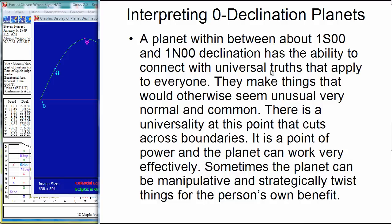So, you're neither north nor south. You're very, very close to it. So, your ability to connect with universal truths that apply to everyone, you're able to make things that would otherwise seem unusual feel very normal and common. So, it's almost as if when you get close to this zero declination, instead of getting bored and completely stuck in the middle of the road, a special power comes about and they seem to be aware if they have any planets that are near or out of bounds, they're able to bring that power right into the mainstream.